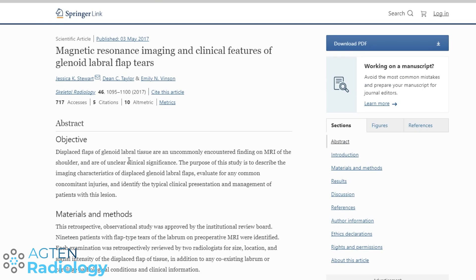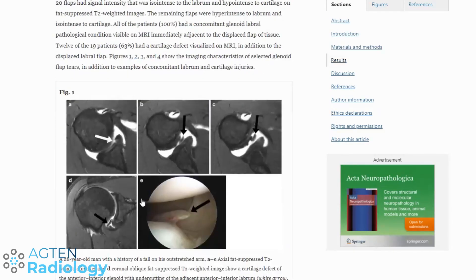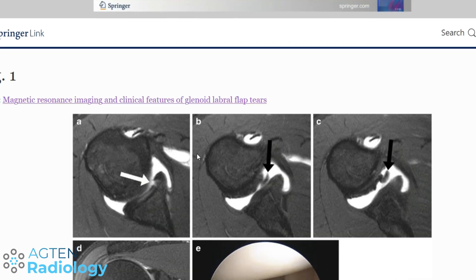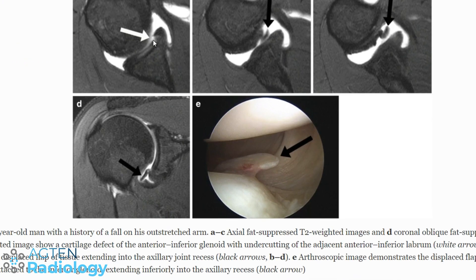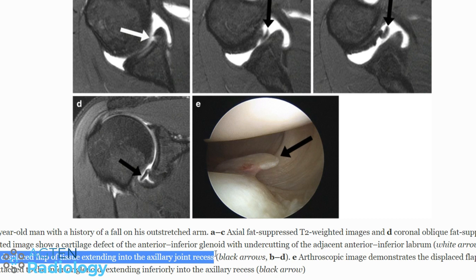This article included 19 patients with flap-type tears. Looking at the images, this is a very similar case to the one I showed — same chondrolabral tear, cartilage also affected, the flap going in the same direction. It's not a loose body or bony structure. This is basically the same case: a fall on the arm, not even a dislocation, just a delamination or shearing injury leading to a displaced flap of tissue extending into the axillary joint recess. The arthroscopic image confirms this displaced flap, still attached to the inferior labrum and going down into the recess.